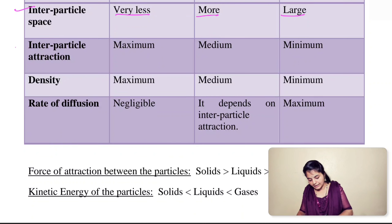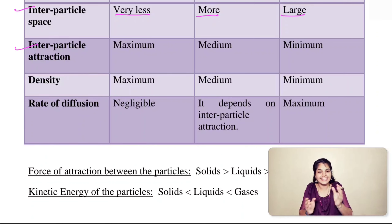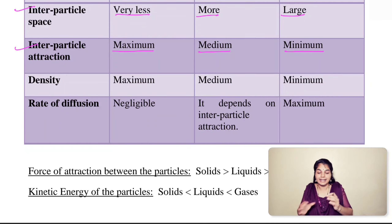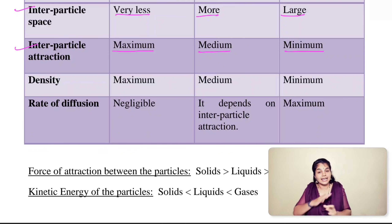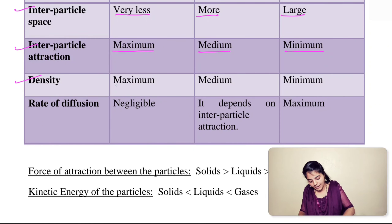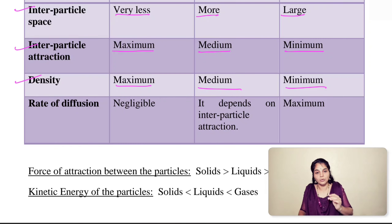Regarding attraction between particles in solids, liquids, and gases: in solids, particles are closely packed so attraction is maximum; in liquids, attraction is medium; in gases, attraction is minimum because particles can move in any direction, increasing the space between them. Regarding density: density is maximum in solids, medium in liquids, and minimum in gases.